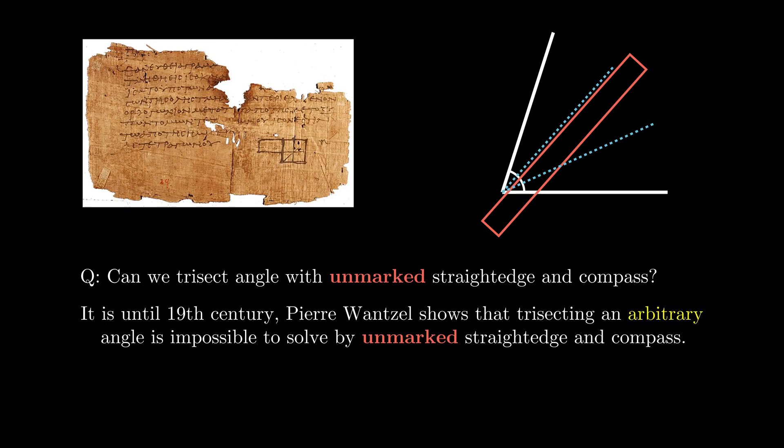There are two keywords in this statement. The first one is the word arbitrary, which means we are looking for a general method that is applicable to any angle. In contrast, there might be some ways to perform angle trisection for some very special angles.